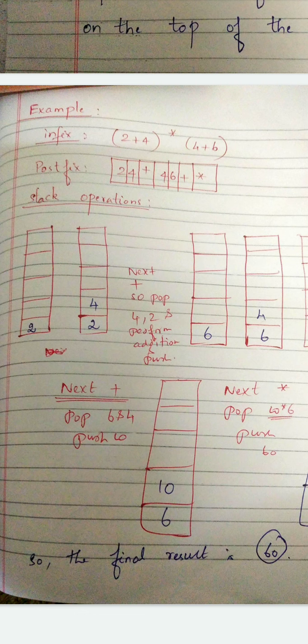You have to pop out the two most operands and you should perform the particular operation. Now as per this case, you have to pop out 4 and 2 and you should perform plus operation. So now the value is 6. You have to again push back the 6 inside the stack.